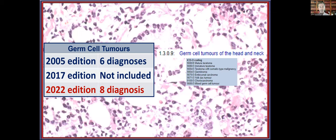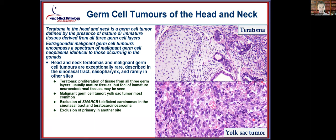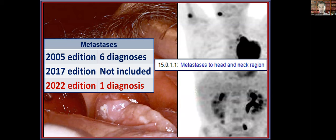Germ cell tumors in the head and neck are aggregated into a single location: teratoma is considered a benign lesion arising from all three germ cell layers, while extragonadal malignant germ cell tumors encompass the full spectrum seen in the gonads. Yolk sac tumor is by far the most common malignant germ cell tumor, but SMARCB1- or SMARCA4-deficient carcinomas and even teratocarcinosarcoma can mimic yolk sac tumor and must be excluded. Ruling out metastatic disease is also an important consideration.